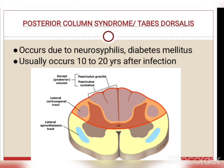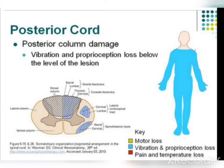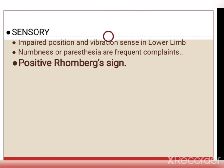In posterior column syndrome there is impaired position and vibration sense in the lower limb, numbness, paresthesia, and a positive Romberg sign — meaning the person is unable to stand straight without looking towards their feet. Anterior cord syndrome occurs due to blockage of the anterior spinal artery; the anterior part of the spinal cord is injured, interrupting all tracts found in the anterior white column. Signs and symptoms include loss of pain and temperature sensation at and below the level of the injury, and involvement of the corticospinal tract.